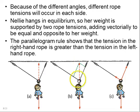So if you use the parallelogram rule, you will see that this tension in the left-hand rope must be less than the tension in the right-hand rope, so that they add to go straight up.